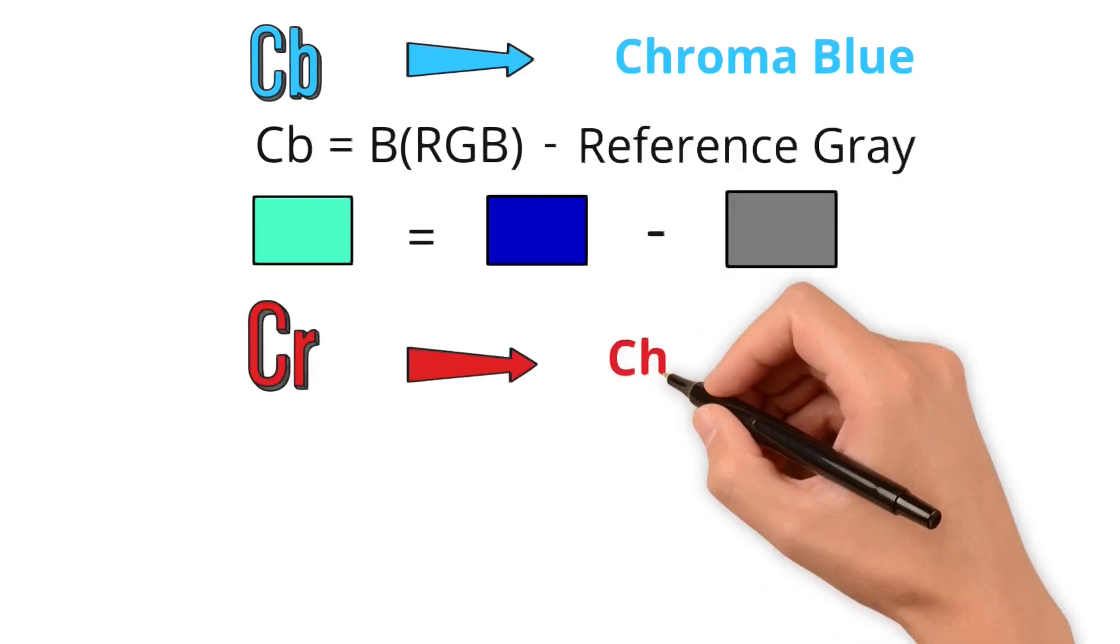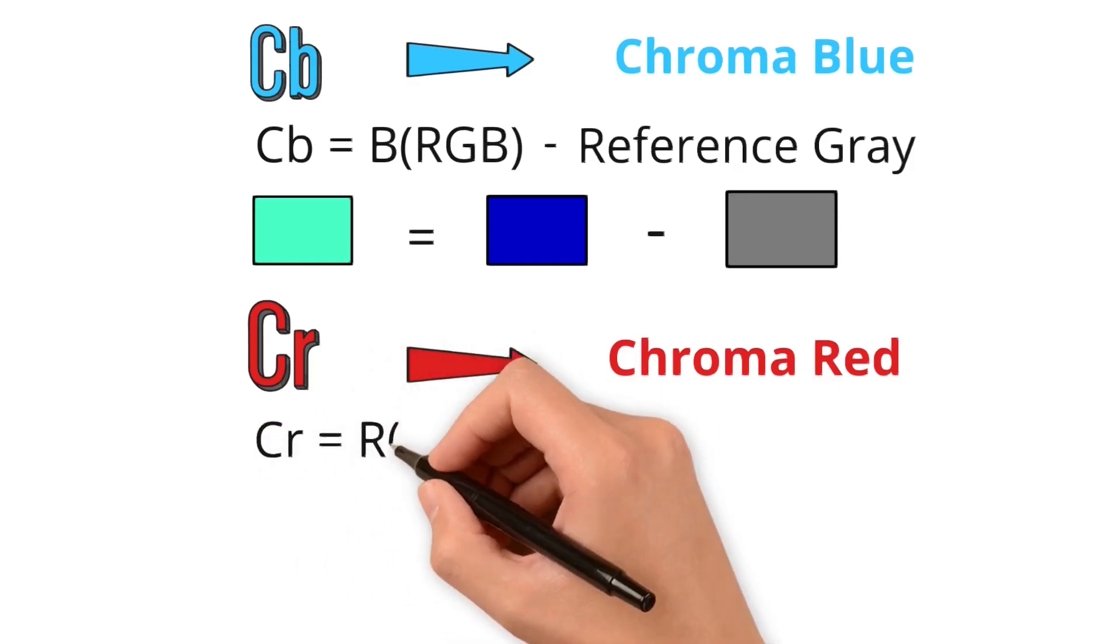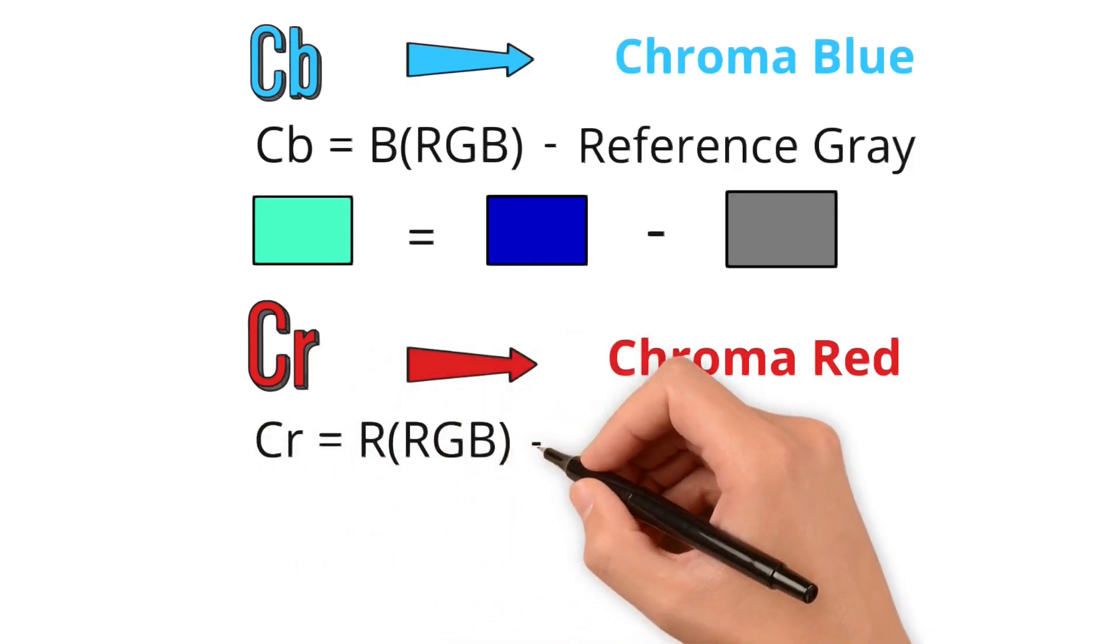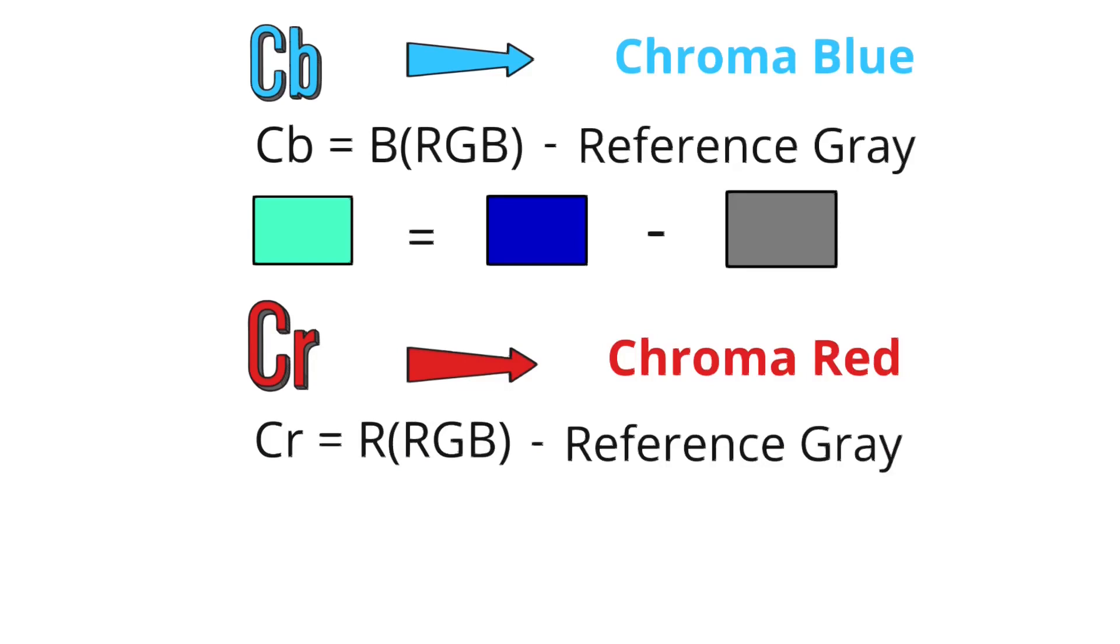CR stands for chroma red. It's the difference between the red part of an RGB image and the same reference value. The CR value shows how much red is in the color compared to the neutral gray.